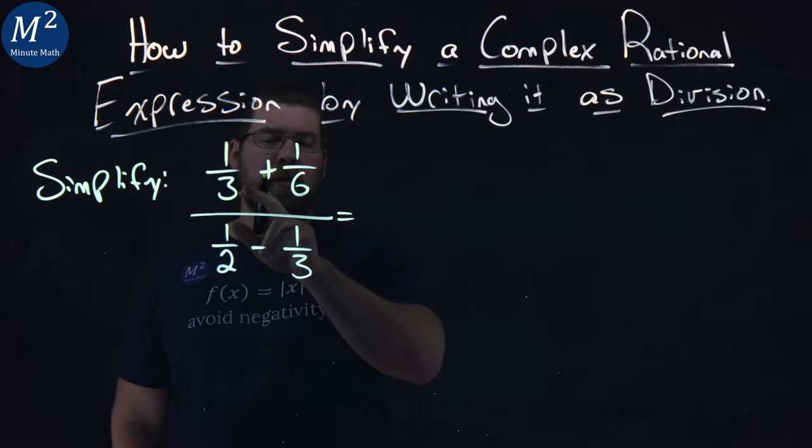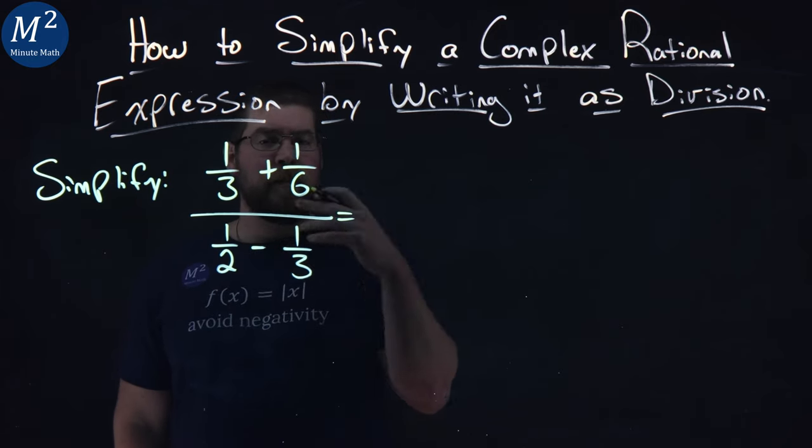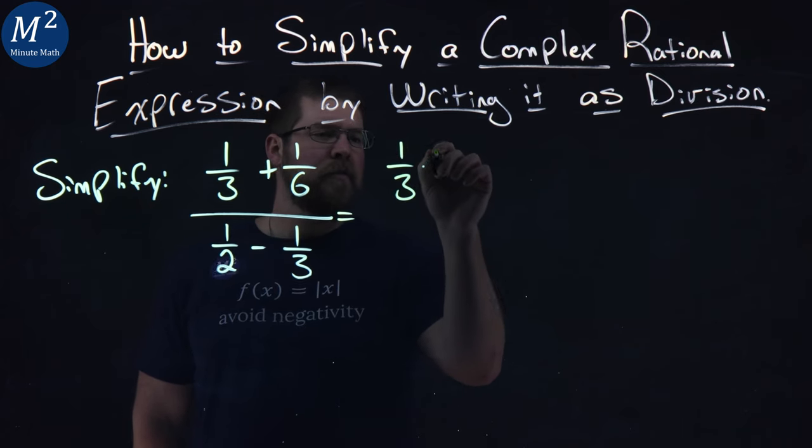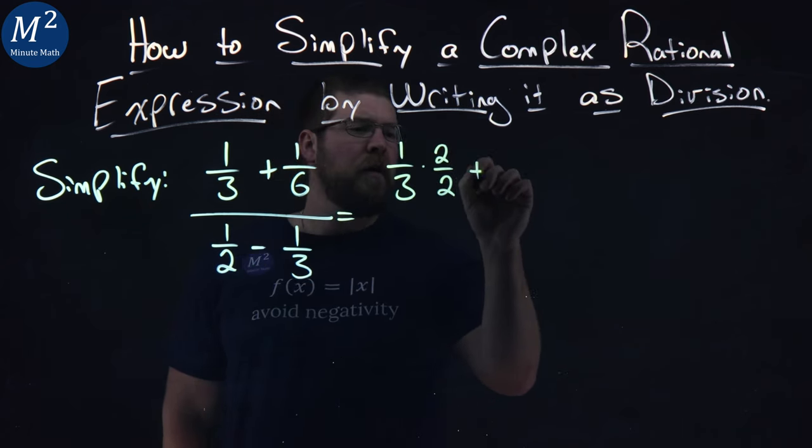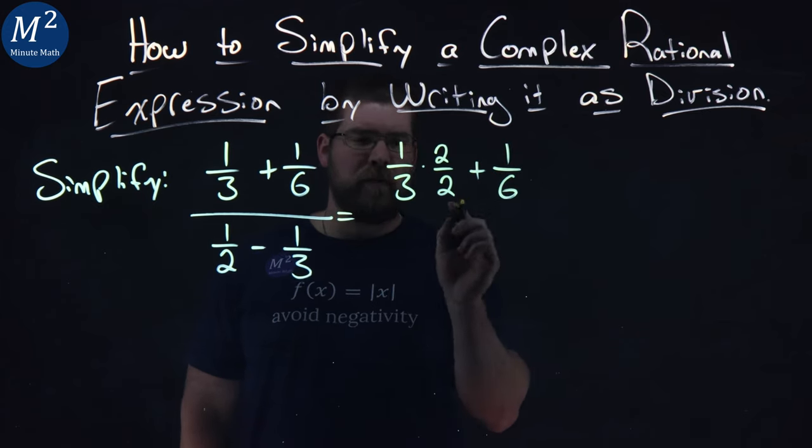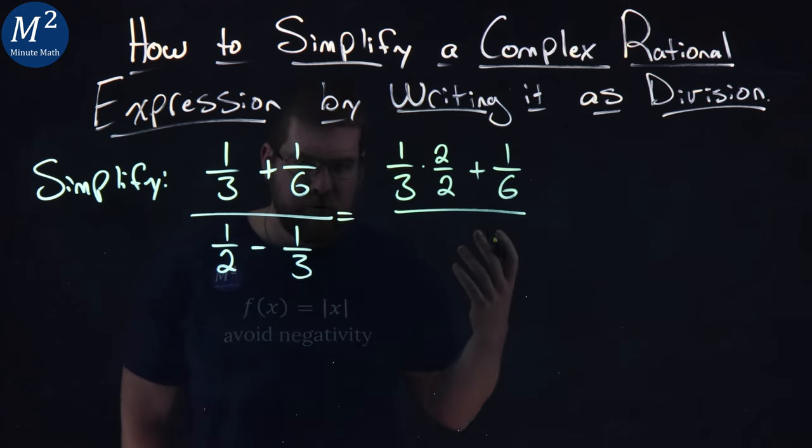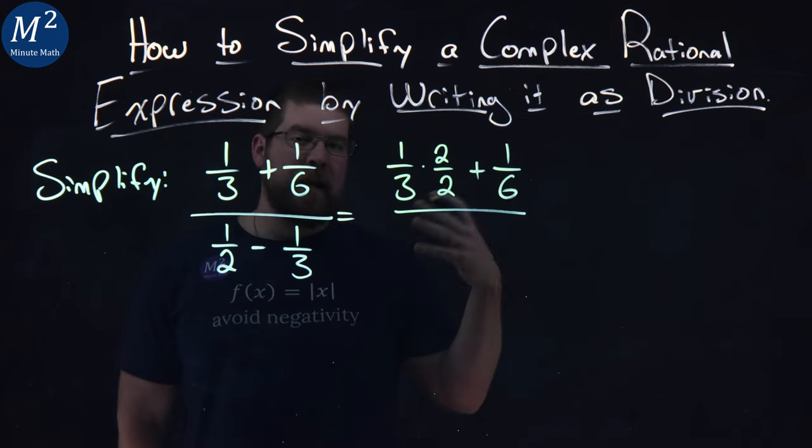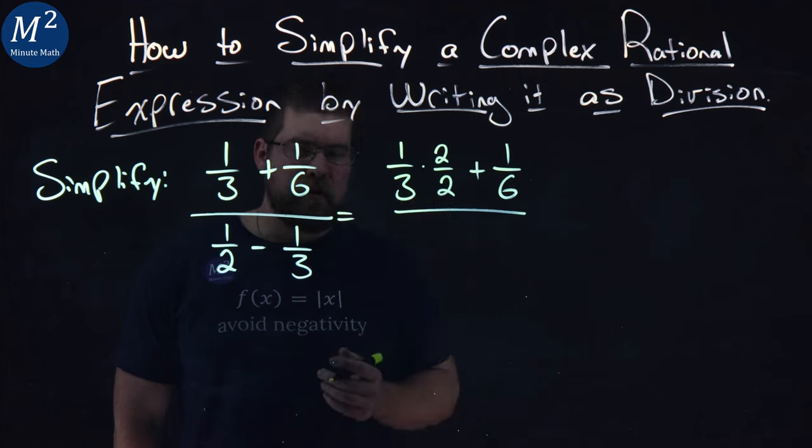Well, I can make the 1/3 have a denominator of 6 if I multiply it by 2/2. So I have 1/3 times 2/2 plus 1/6 there, right? 3 times 2 is going to give me that 6 here. And reminder, 2/2 is just 1, and we can multiply any number by 1 and it doesn't change it. That's why we can do this.